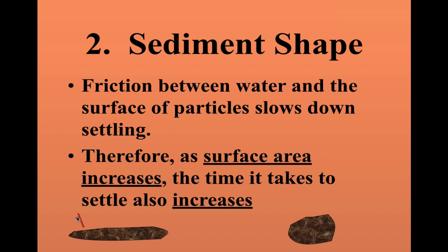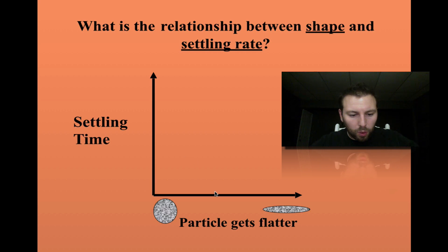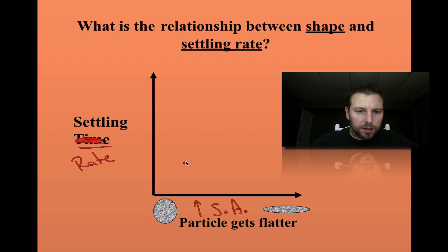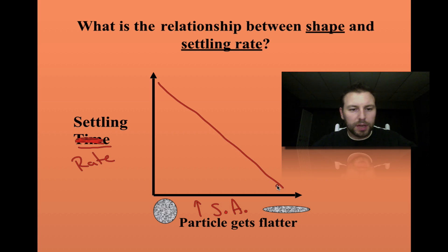Sediment shape also affects how it deposits. Flatter particles have increased surface area, so they settle slowly. A particle with decreased surface area will settle fast. If we graph this relationship, as surface area increases, the settling rate decreases — an inverse relationship.